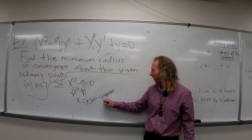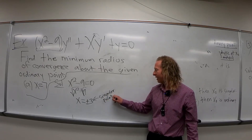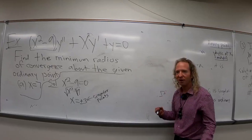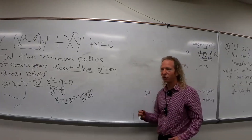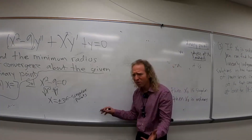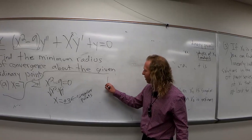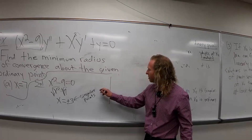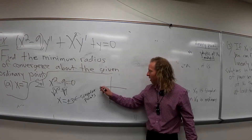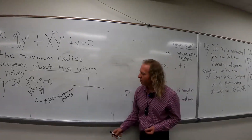You could probably do this problem in your head, but I like drawing pictures because it's fun. So let's draw a picture. To figure out your singular points, you figure out your R — your radius of convergence. Draw a picture and plot your singular points.